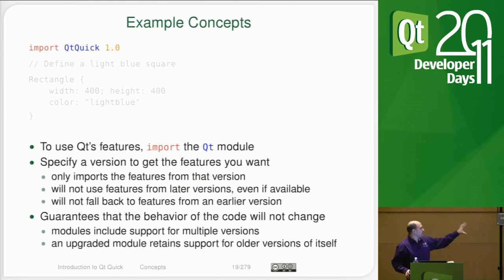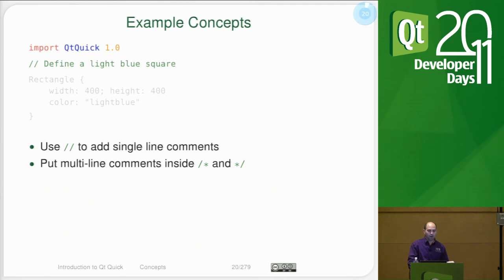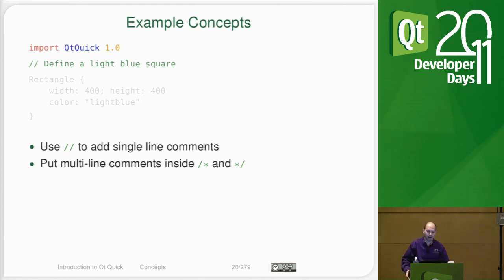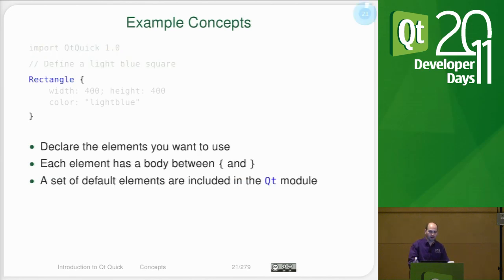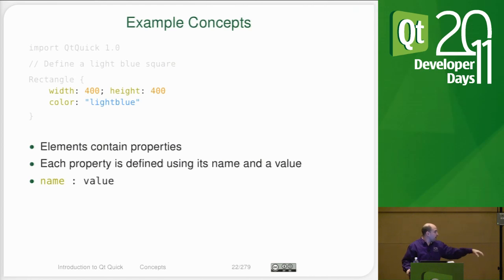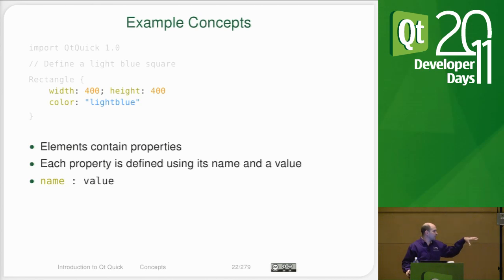The import statement is a guarantee of the functionality that you're going to be getting. The comment structure is C and C++ style — slash-slash and slash-star are the ways to define comments. Items are basically instantiated and you wrap them in curly braces to define the scope of the property changes. In this scope is where you're going to be making child items, as well as setting properties, introducing, and writing functions.